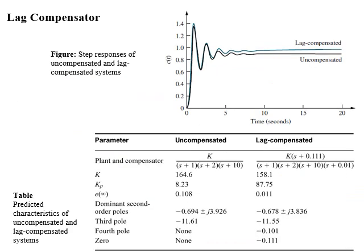The figure represents the step response of the compensated and uncompensated systems, and the steady-state error and location of poles for both systems are summarized in the table. The steady-state error for the uncompensated system equals 0.108, whereas that of the compensated system is 0.011.